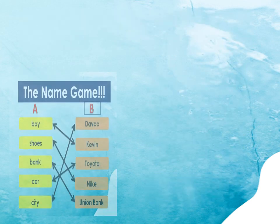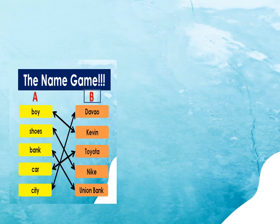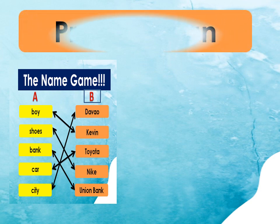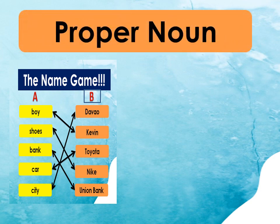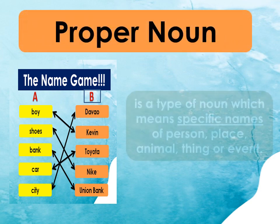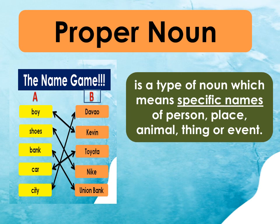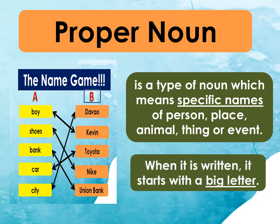How about those nouns in column B? Do you have any idea what we call them? We call them proper nouns. A proper noun is a type of noun which means specific names of a person, place, animal, thing, or event. When it is written, it starts with a big letter.